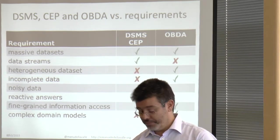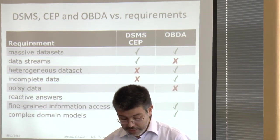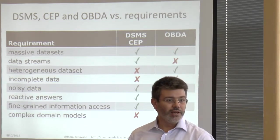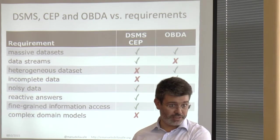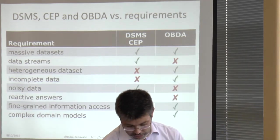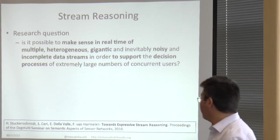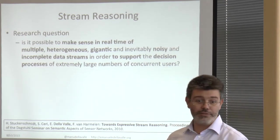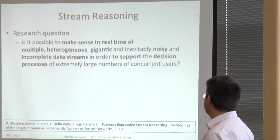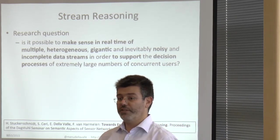But data streams are not there — or at least were not. Noisy data are a problem because you're in a logic framework and don't want noise there. Reactive answers are normally not possible: even if ontology-based data access brings query time down, if you have to load data into a database first, it will never work, because that paradigmatic change is what you need to treat velocity. So we made it a research question. Seven years ago, together with Frank van Harmelen, Stefano Ceri, and Dieter Fensel, we wrote down this sentence: we want to try to make sense in real time of multiple heterogeneous, gigantic, and inevitably noisy and incomplete data streams in order to support the decision processes of an extremely large number of concurrent users.